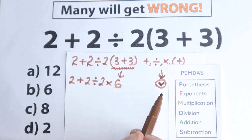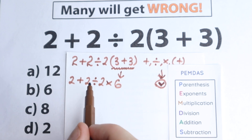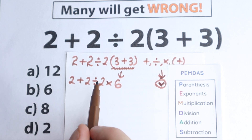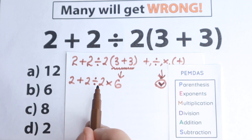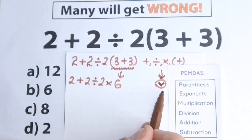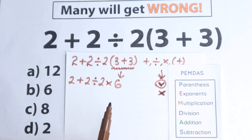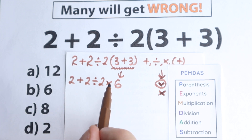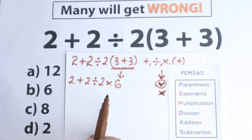The next step is exponents. Let's look at whether we have any exponents — maybe squares or cubes — but no, I don't see any. We don't have any exponents, so we just skip this part, which is really great, because with exponents it would be a more complicated question.